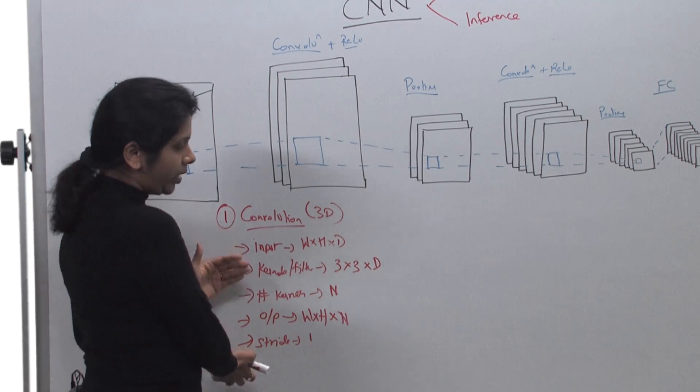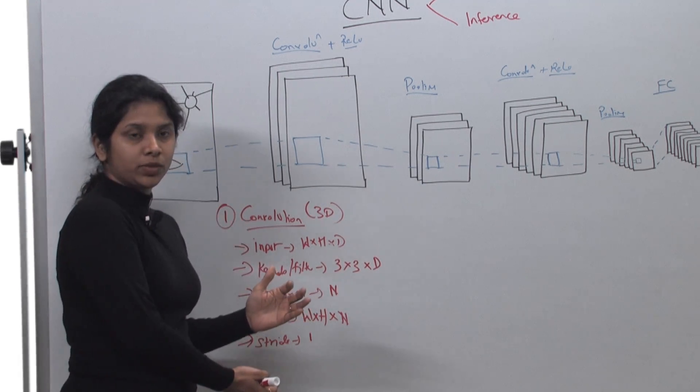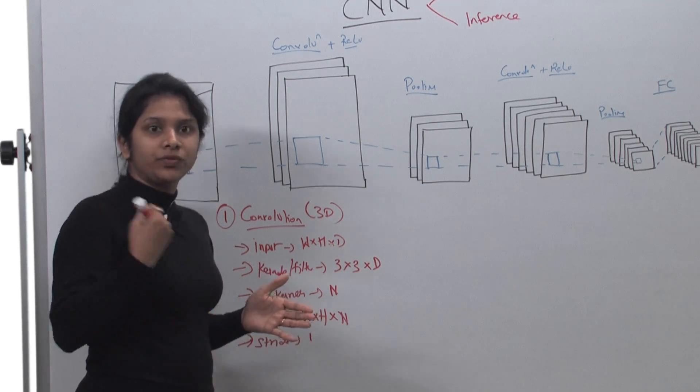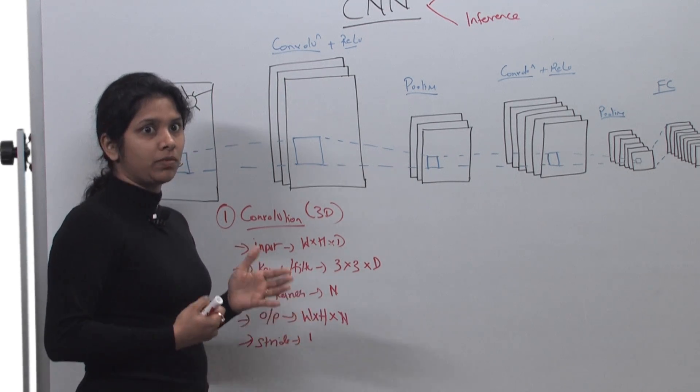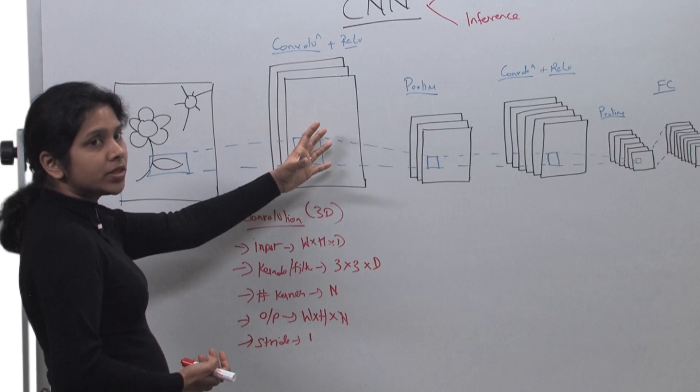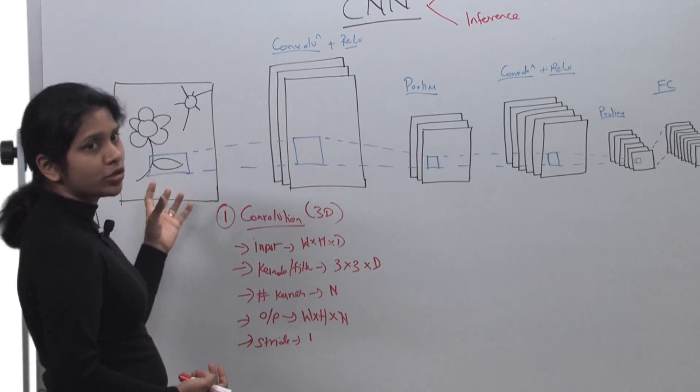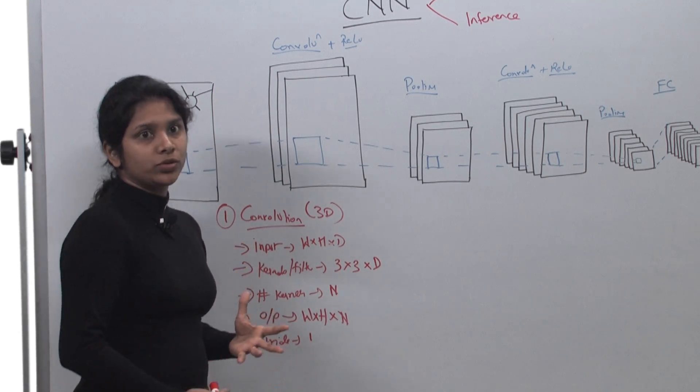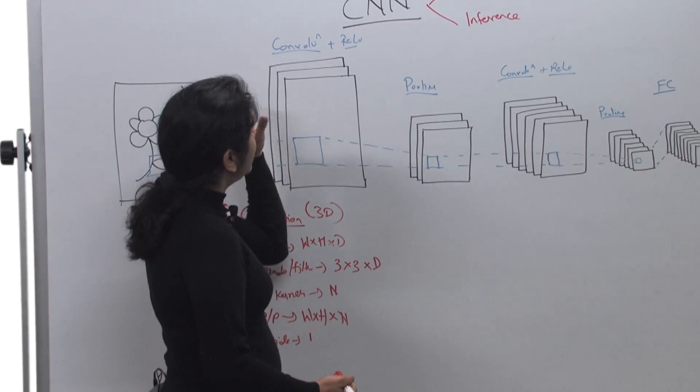So stride will basically act as a downsampling. But here we are giving an example of stride of 1, so we are processing every sample. That's the convolution layer. The importance of convolution layer is to extract the activation features from the given input image. By that I mean one filter could be extracting the edges of an image, one filter could be extracting the colors of the image, and so on.